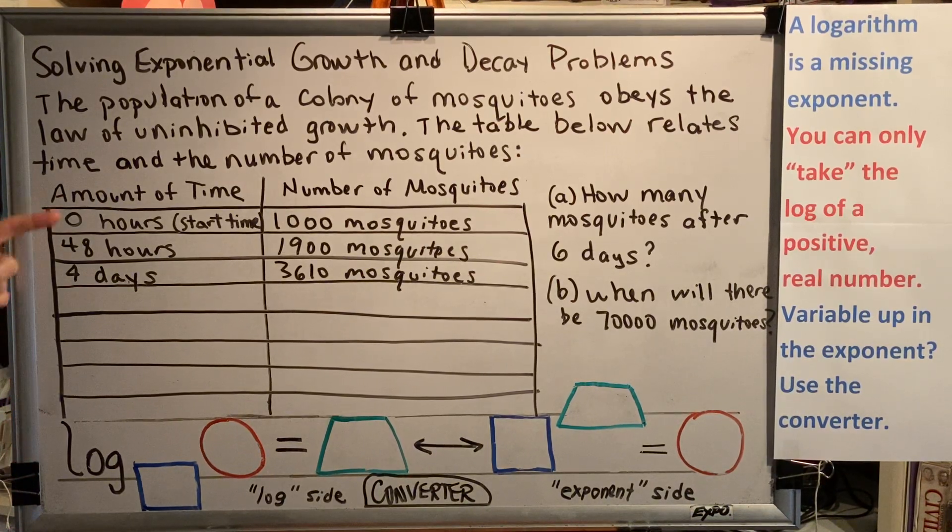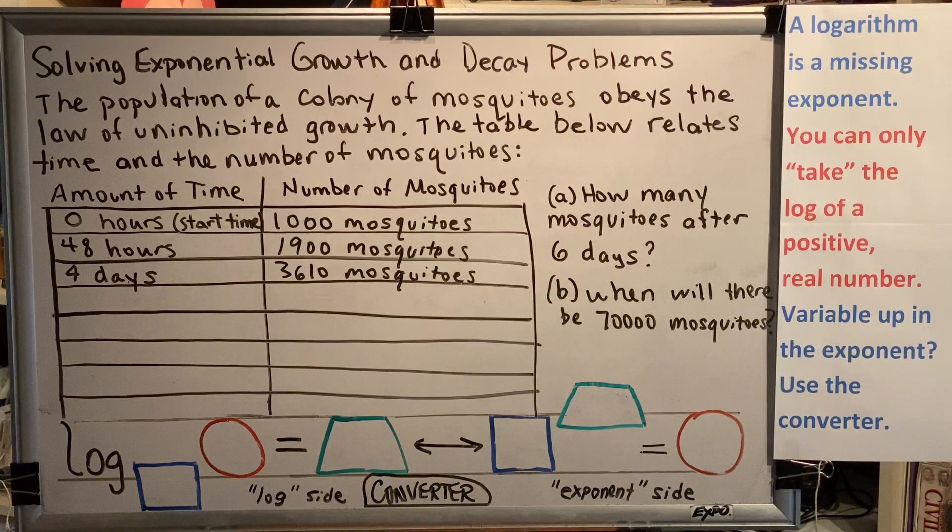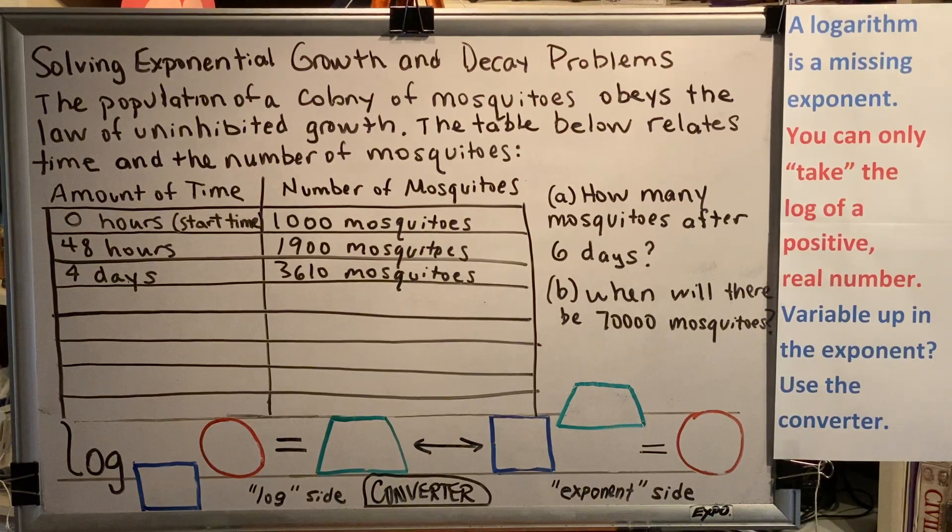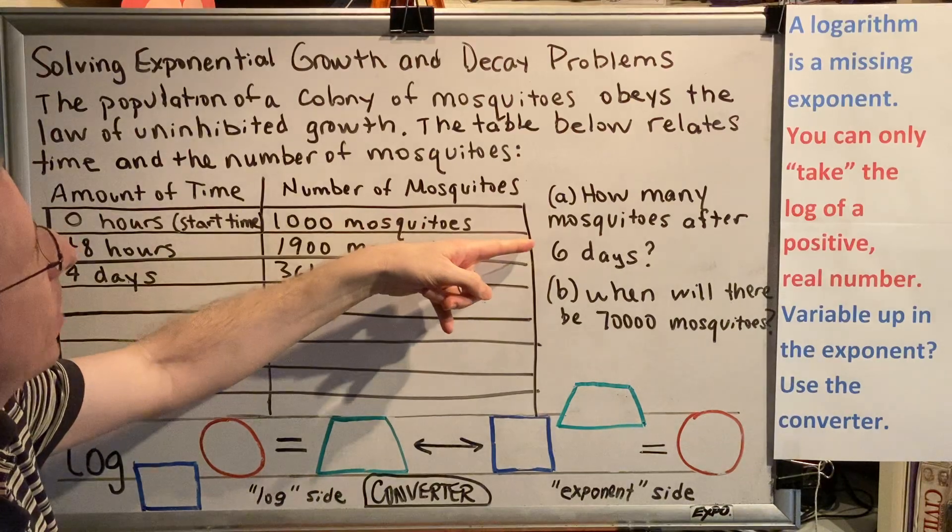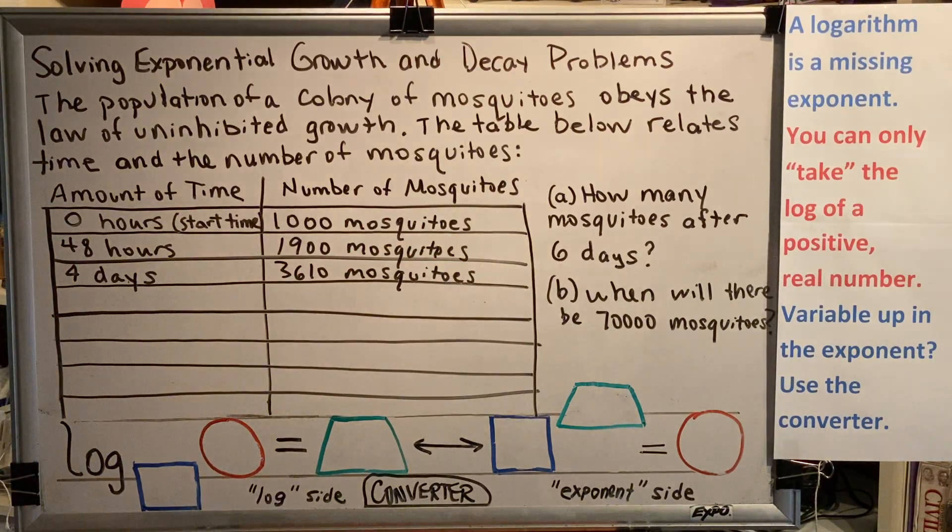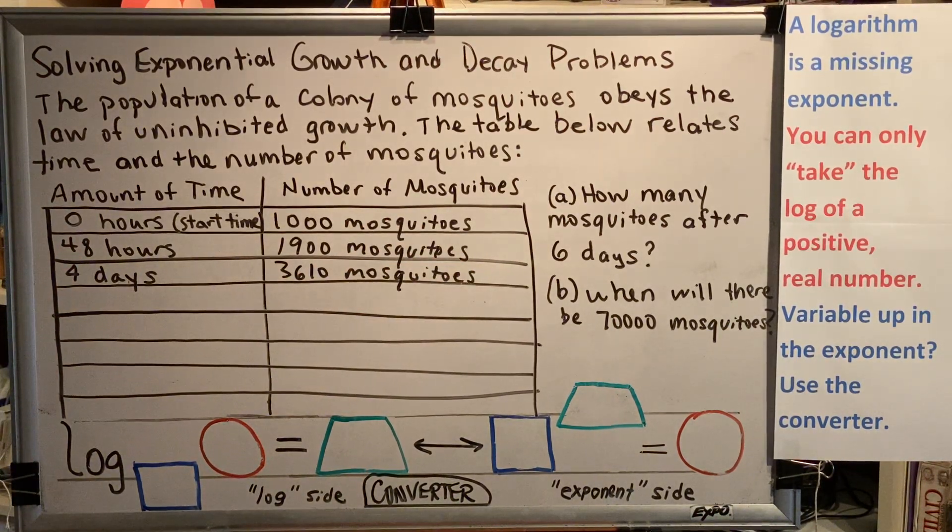The first thing you have to understand about using patterns is that your time units have to be consistent. In our table, we have a mixture of hours and days, which is not allowed within a table. It has to all be converted to hours or all be converted to days. Which one should we choose? To answer that question, you should look at part A, which says how many mosquitoes after six days?